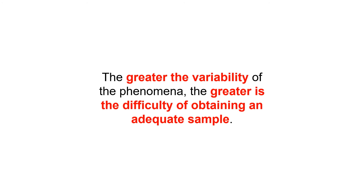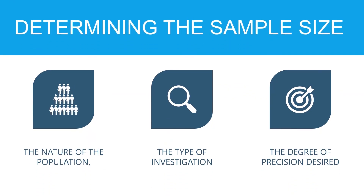The safest procedure is to use as large a sample as possible. In general, three factors determine the size of an adequate sample: the number of the population, the type of investigation, and the degree of precision desired. Researchers give careful consideration to these factors and then select the sample design that will provide the desired precision at minimum cost.